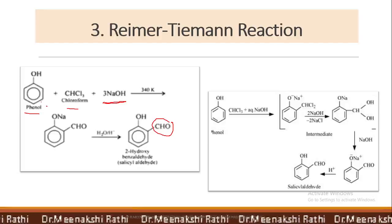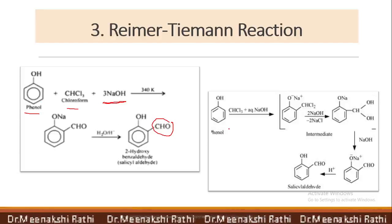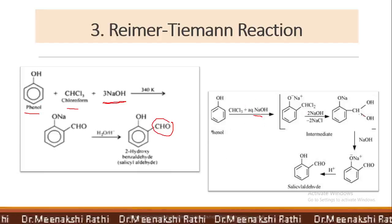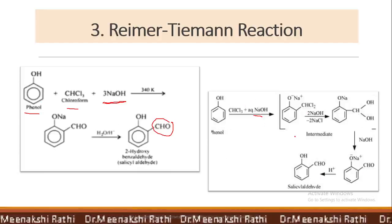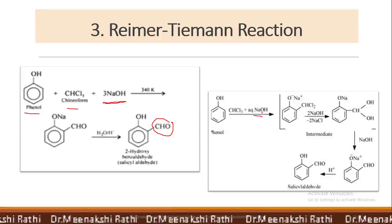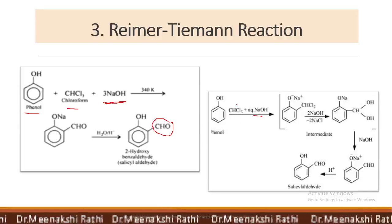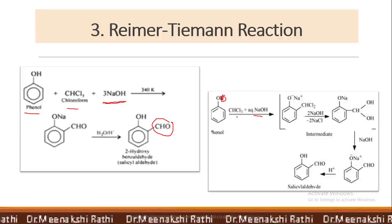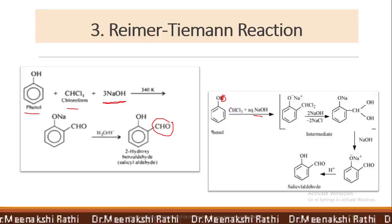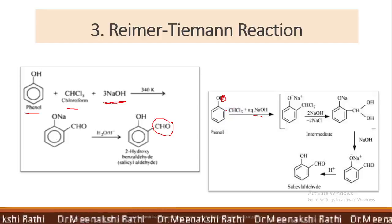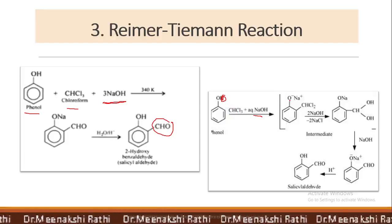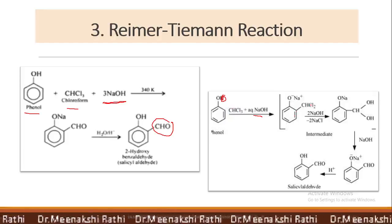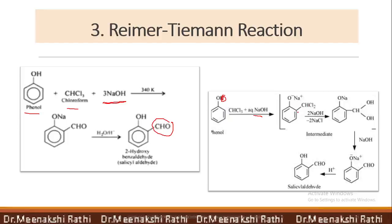When phenol reacts with chloroform and aqueous base like NaOH, a series of reactions occur. First, NaOH, which is a base, abstracts the acidic proton of phenol. The chloroform CHCl3 attaches ortho to the phenolic group, giving a sodium phenoxide salt with an O-Na⁺ and a CHCl₂ group attached ortho.